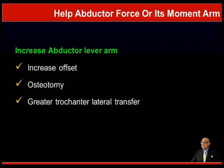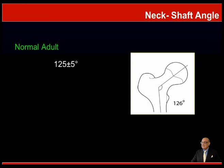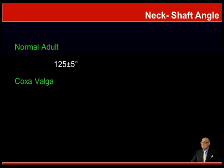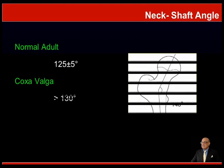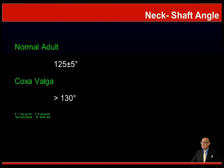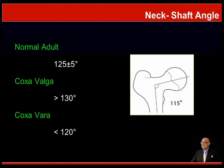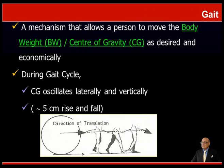This also helps the abductor force or its moment arm. An increase in the abductor lever arm would increase the offset, such as by an osteotomy or a transfer of the greater trochanter to the lateral side. Regarding the neck-shaft angle, in a normal adult it is usually 125 degrees plus or minus 5 degrees. In coxa valga this is more than 130 degrees, and in coxa vara it would be less than 120 degrees.